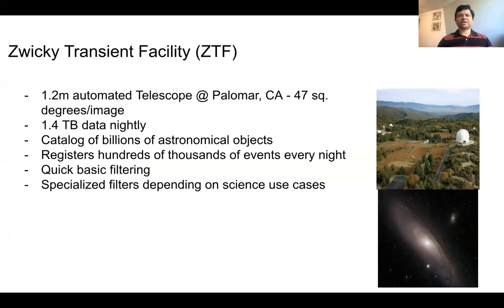The Zwicky Transient Facility uses the 1.2-meter automated telescope. It gathers about 1.4 terabytes of data every night and catalogs billions of astronomical objects. It registers hundreds of thousands of events every night. Quick basic filtering is done, and specialized filters are used depending on science use cases.